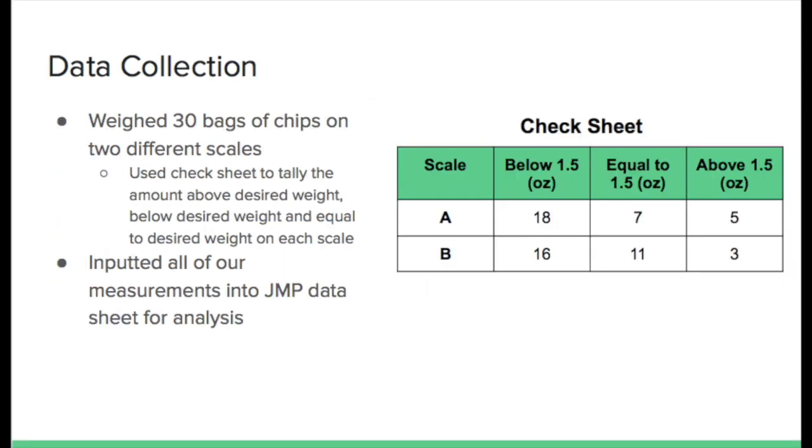So when we collected data, we primarily focused on the idea of faulty scales. And to do this, we weighed 30 bags of Lay's chips that are supposed to be 1.5 ounces from Costco on two different scales. And we use the check sheet to the right to tally the amount of above desired weight, below desired weight, and equal desired weight on each scale in ounces. So anything above or below 1.5 ounces. And we inputted all of our data and measurements into JMP for further analysis.